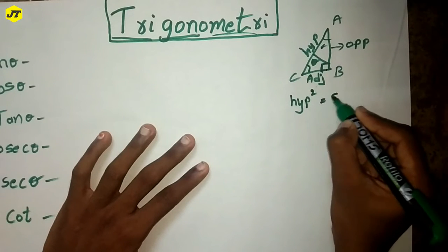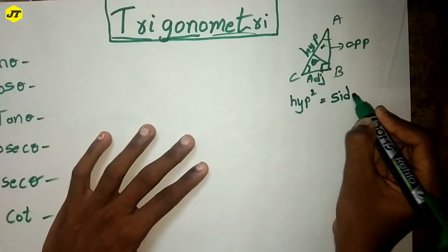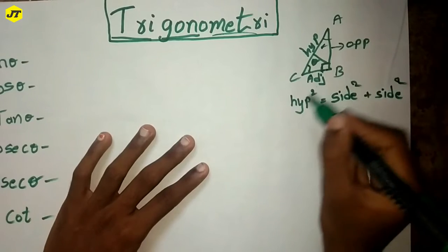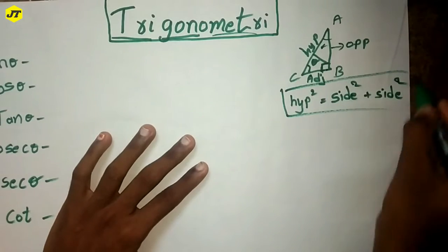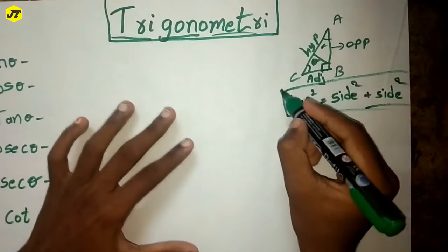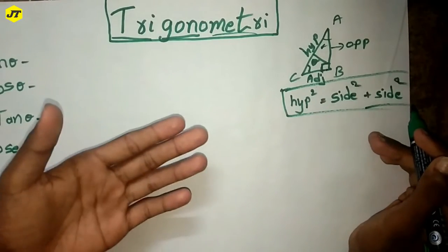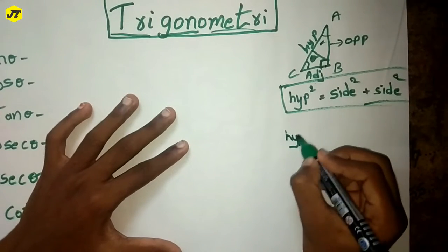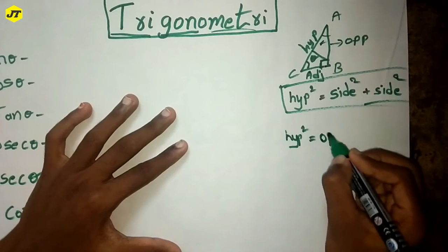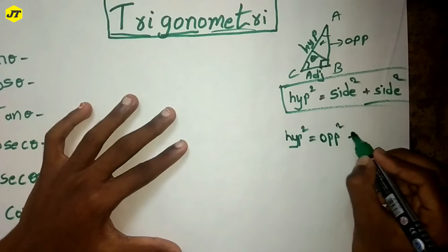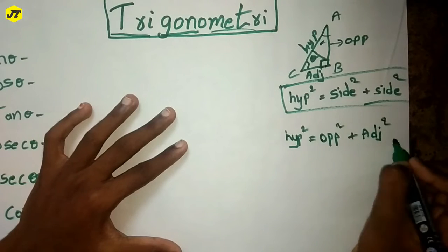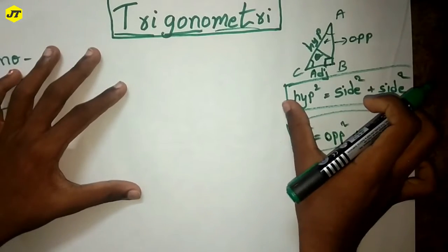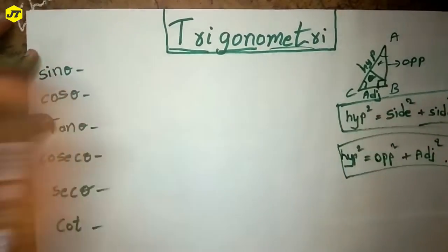One formula is important: hypotenuse squared is equal to side squared plus side squared. This is the formula for lower classes. As we come to 10th class, it is stated as: hypotenuse squared equals opposite squared plus adjacent squared. That's the formula for 10th class.